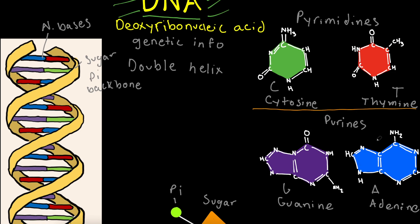In DNA, adenine will always bind with thymine and guanine will always bind with cytosine, and vice versa. To memorize this, you can think about teachers liking apples and cows liking grass — so A pairs with T, and G pairs with C.